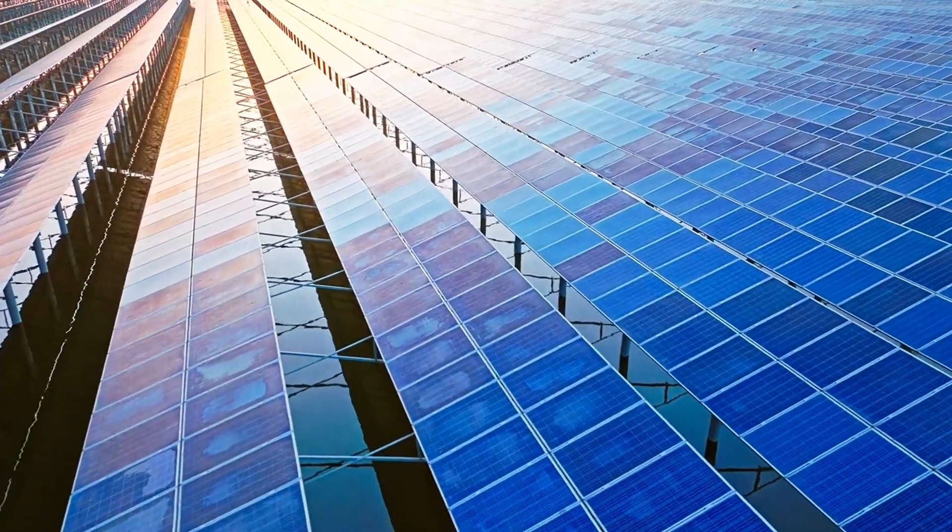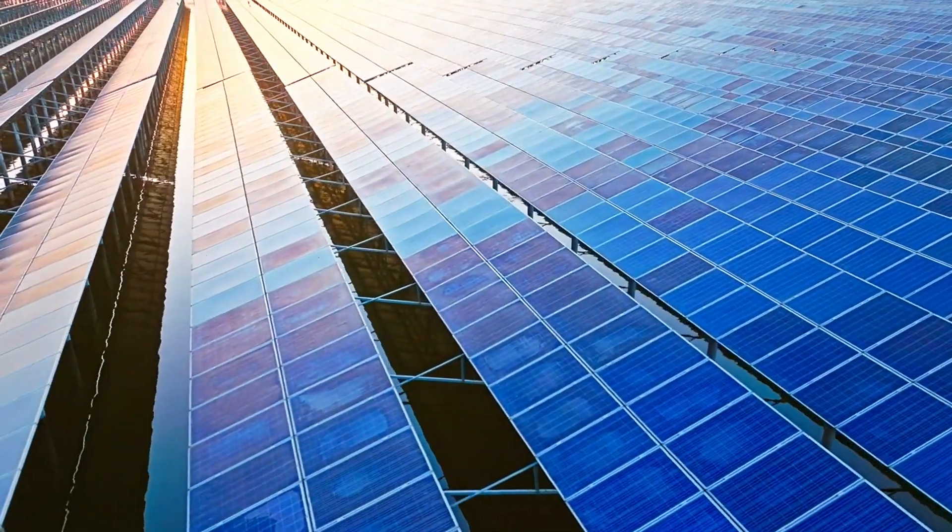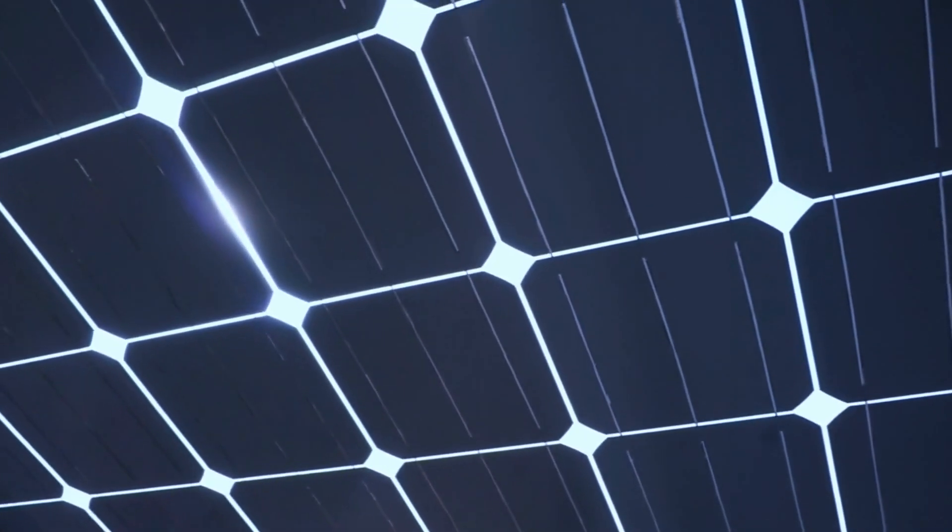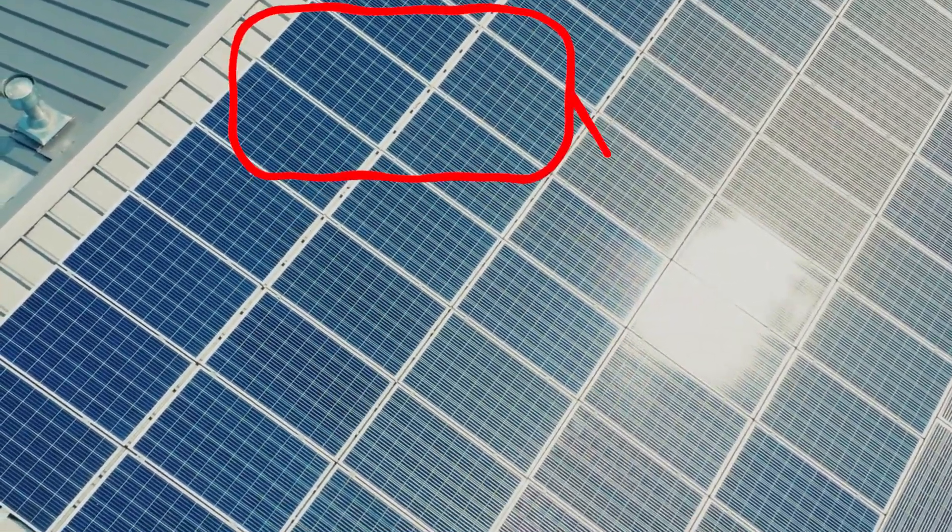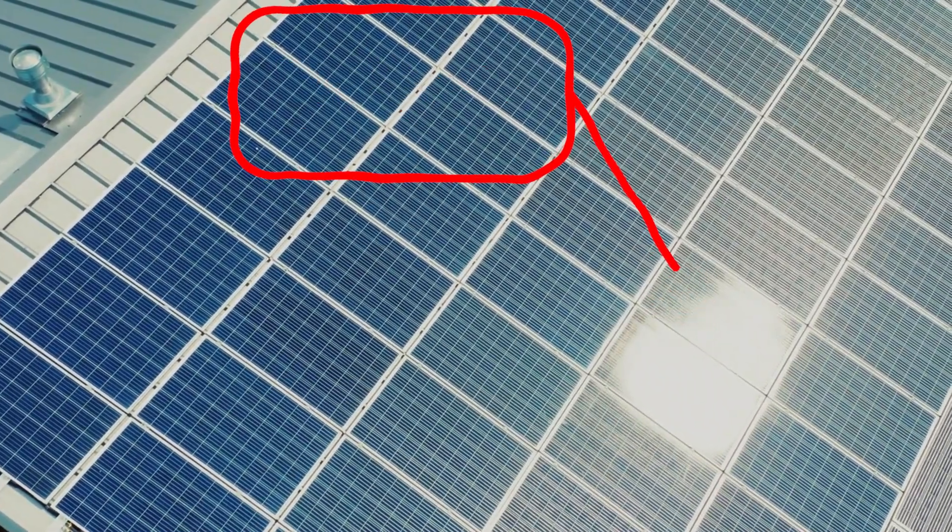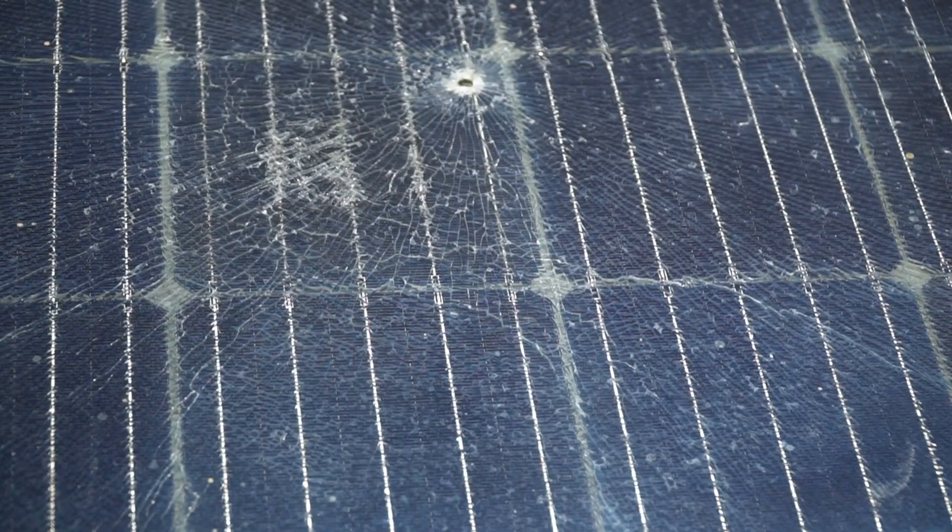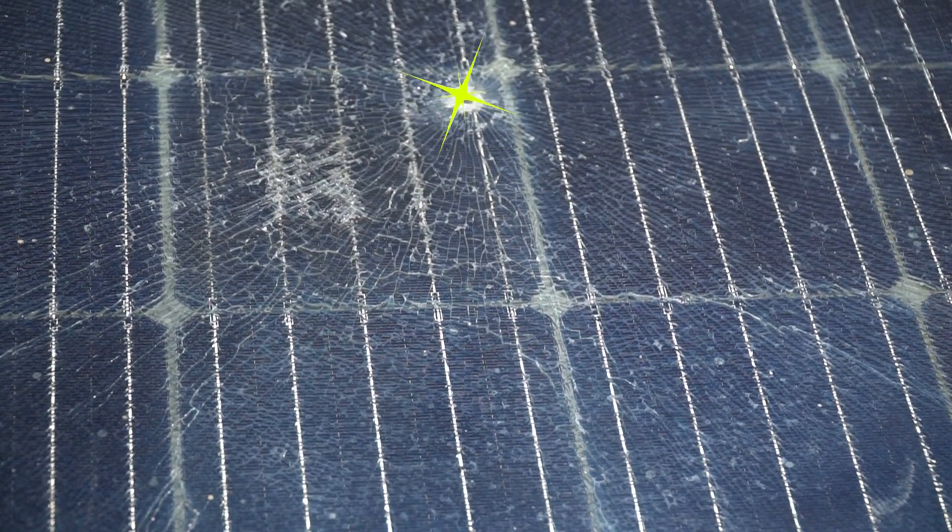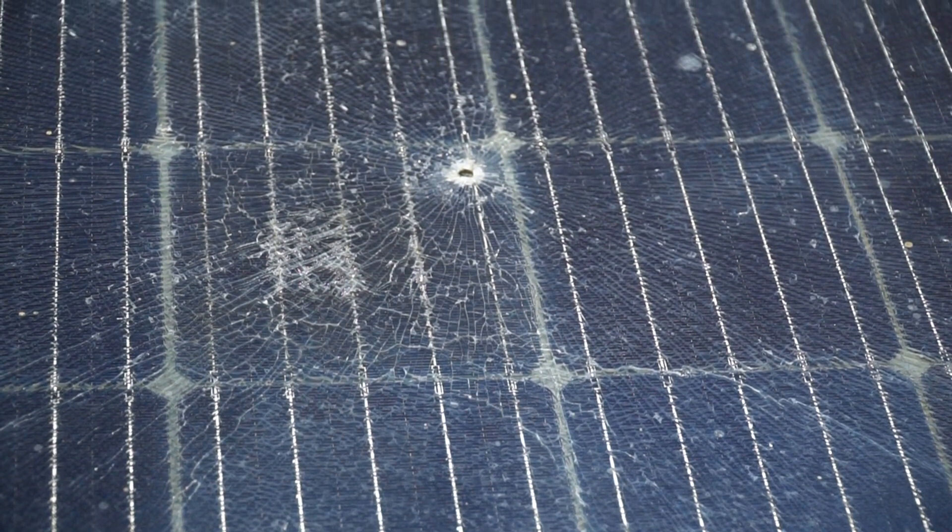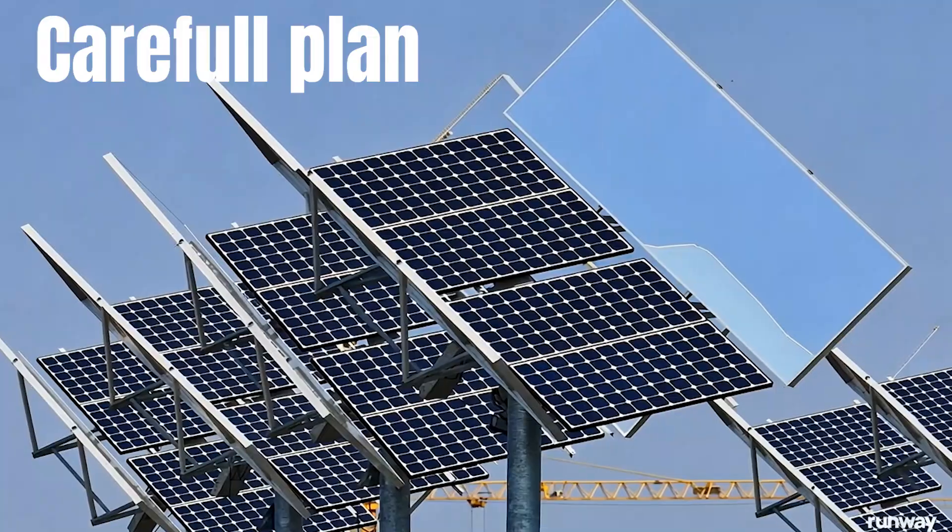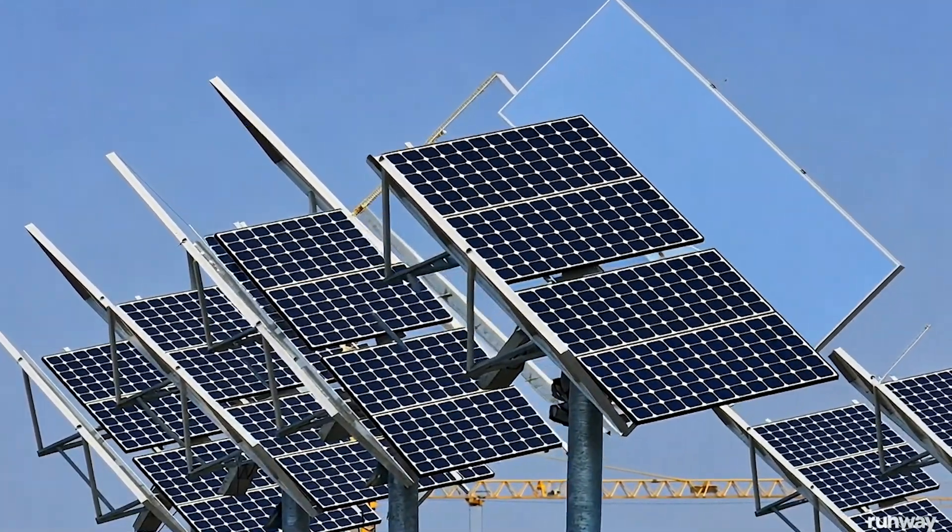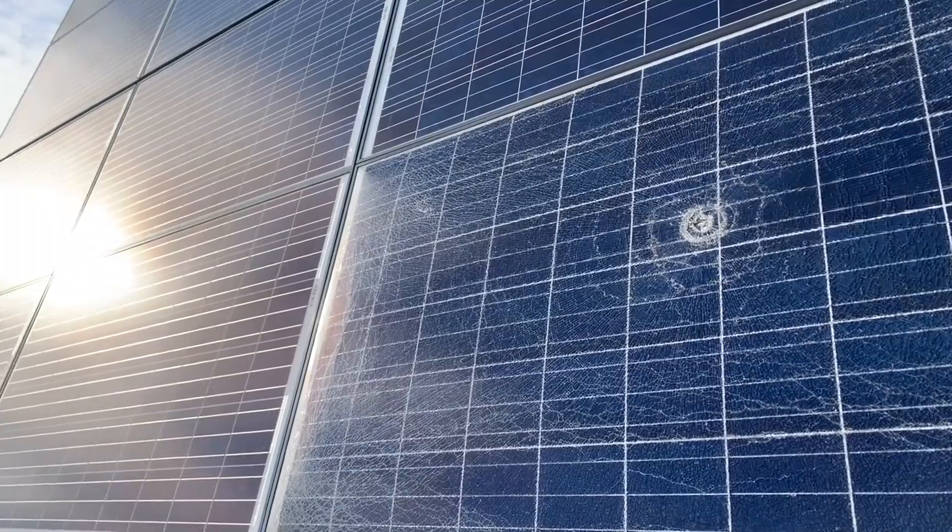Another potential pitfall is uneven light distribution. If the mirrors don't reflect sunlight evenly across the entire panel, you could end up with hotspots where some areas receive much more light than others. These hotspots aren't just inefficient, they can also cause long-term damage to your panels. So, careful planning and precise placement of the mirrors are crucial to avoid creating more problems than you're solving.